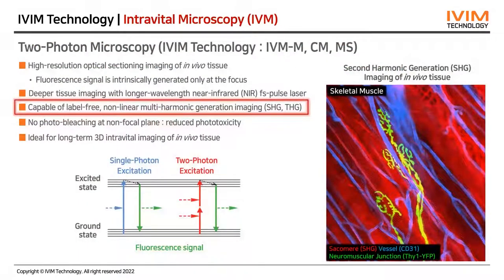Two-photon microscopy enables point excitation, providing high-resolution optical sectioning with deep imaging depth using long-wavelength near-infrared pulsed laser sources. We can acquire clear images with minimized photobleaching and reduced phototoxicity to live tissue. In addition, by second harmonic generation (SHG), we can detect skeletal muscle structures without additional labeling.